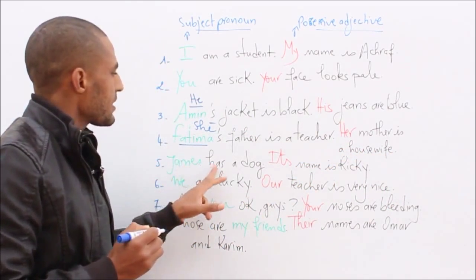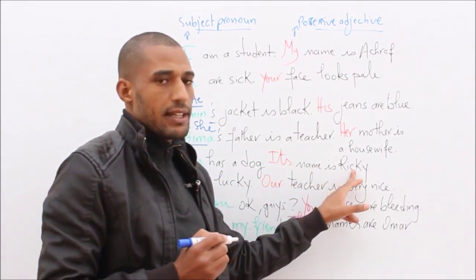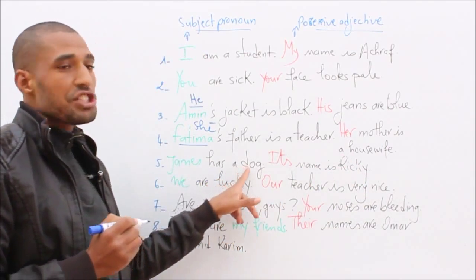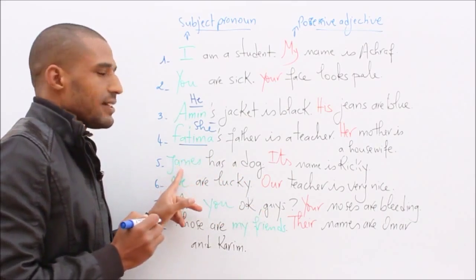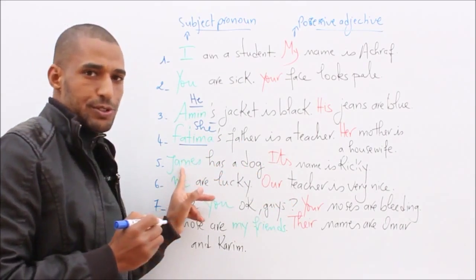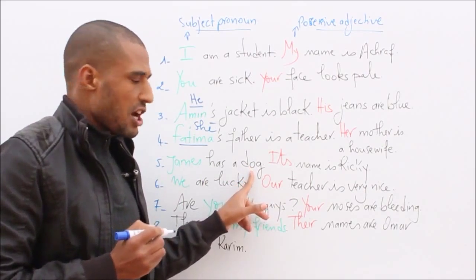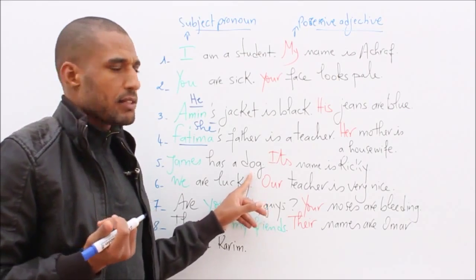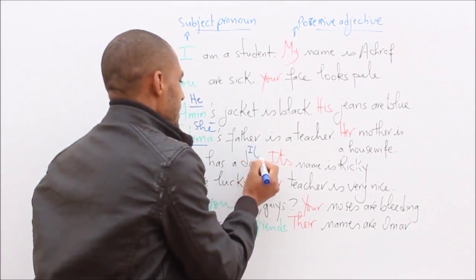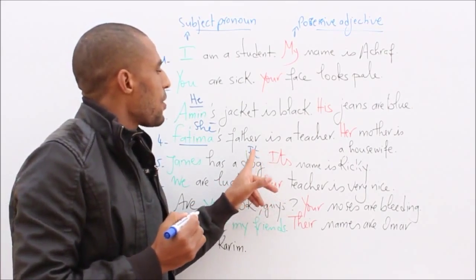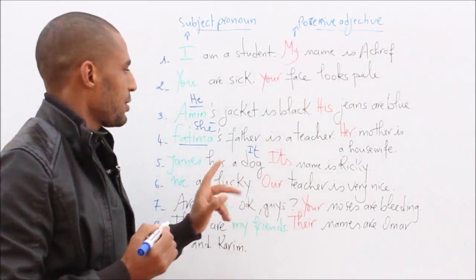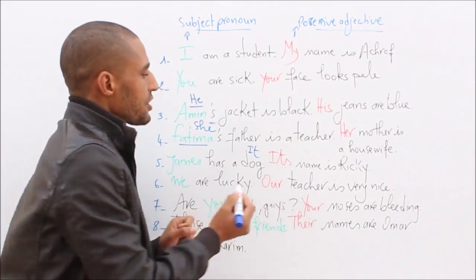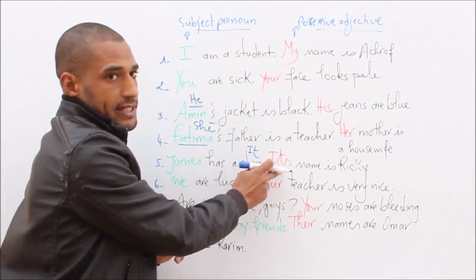Number five: James has a dog. Its name is Ricky. Whose name is Ricky? It is the dog's name — not James. 'Its' does not refer to James; it refers to the dog. A dog is non-human, it's an animal. So the subject pronoun for the dog is 'it', and the possessive adjective is 'its'. Note that the S is attached directly to 'it'.